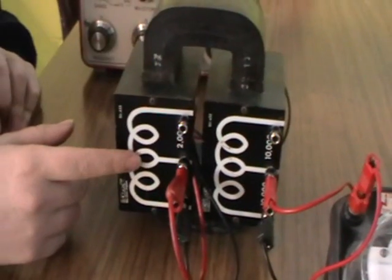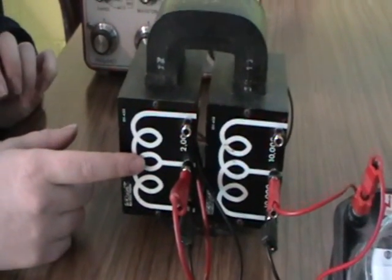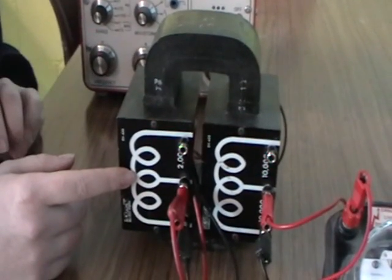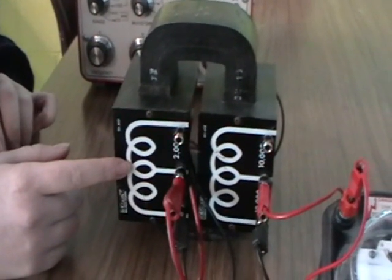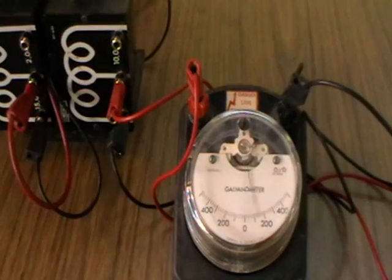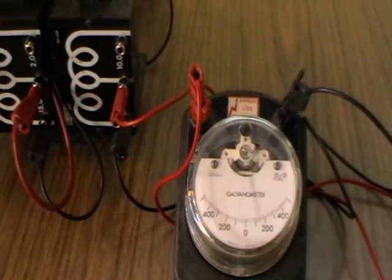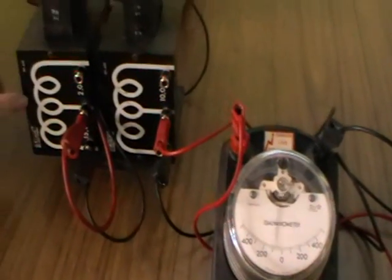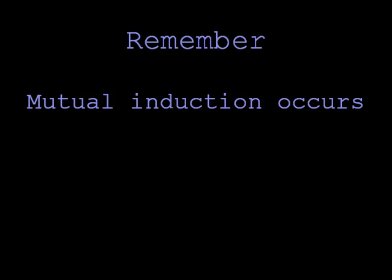The signal generator passes an AC current through this coil. The magnetic field associated with this AC current is constantly changing. The changing electromagnetic field induces a current in the second coil.